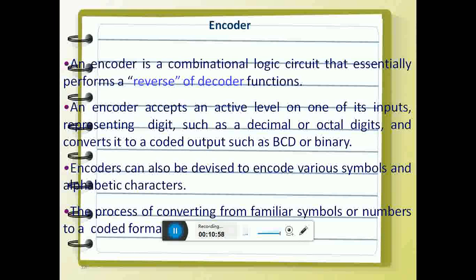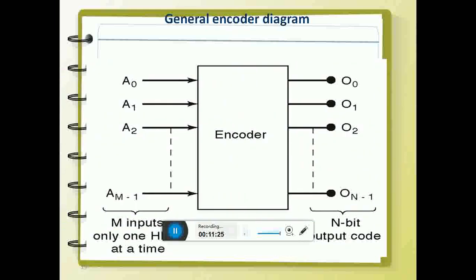What is an encoder? An encoder is exactly opposite of a decoder. It accepts an active level on one of the inputs representing a digit such as a decimal or octal digit, and converts it into a coded output such as BCD or Binary. Encoders can also be devised to encode various symbols and characters. Basically, encoding is to write in code, and decoding is to read what is written as code. It has M inputs and N outputs, and only one input is high at a time.